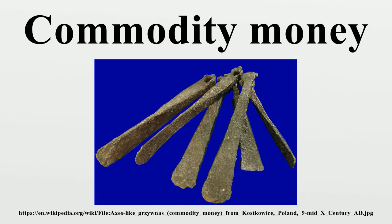A key feature of commodity money is that the value is directly perceived by the users of this money, who recognize the utility or beauty of the tokens as they would recognize the goods themselves. That is, the effect of holding a token for a barrel of oil must be the same economically as actually having the barrel at hand.